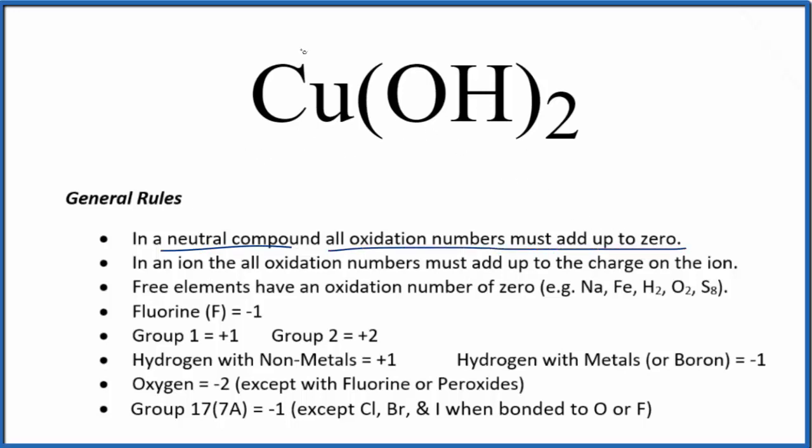We know that copper, this is a transition metal, and this OH, the hydroxide, this is a polyatomic ion. The charge on the whole polyatomic ion, the hydroxide ion, is 1 minus. Do you remember that or look it up? Probably a good one to remember.